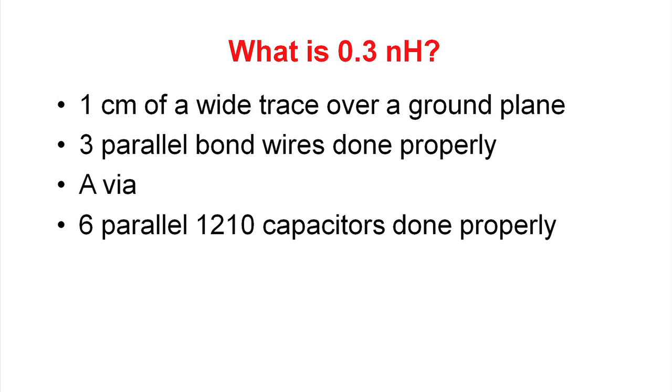A via has 0.3 nanohenries. That's pretty impressive that a via is all we're allowed in inductance between the power supply and load. What really needs to be done in these systems is a very well-done set of capacitors that go along with the load. You can get down to 0.3 nanohenries with six parallel 1210 capacitors if you do it properly.